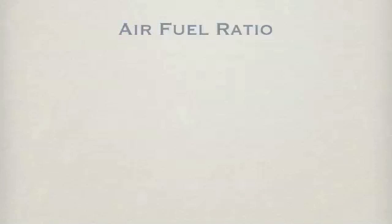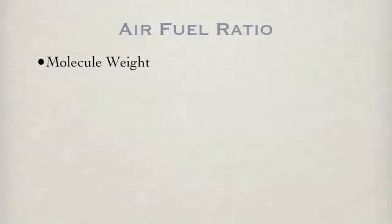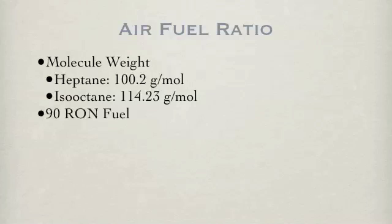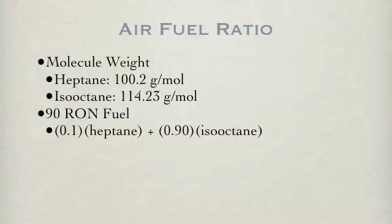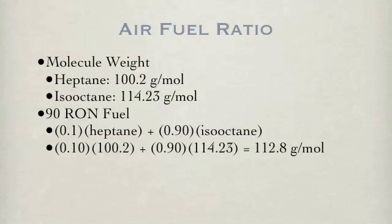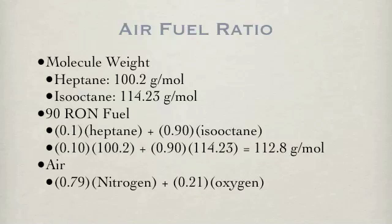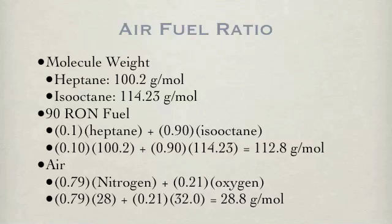To convert moles to grams, we need the molecular weight of the fuel components, namely heptane and isooctane. To compute the effective molecular weight of a 90 RON fuel, we take 10% of heptane and 90% of isooctane molecular weight, and this gives a combined molecular weight of 112.8 grams per mole. The same principle is used to compute the effective molecular weight of air, which is 79% nitrogen and 21% oxygen, giving an effective weight of 28.8 grams per mole.